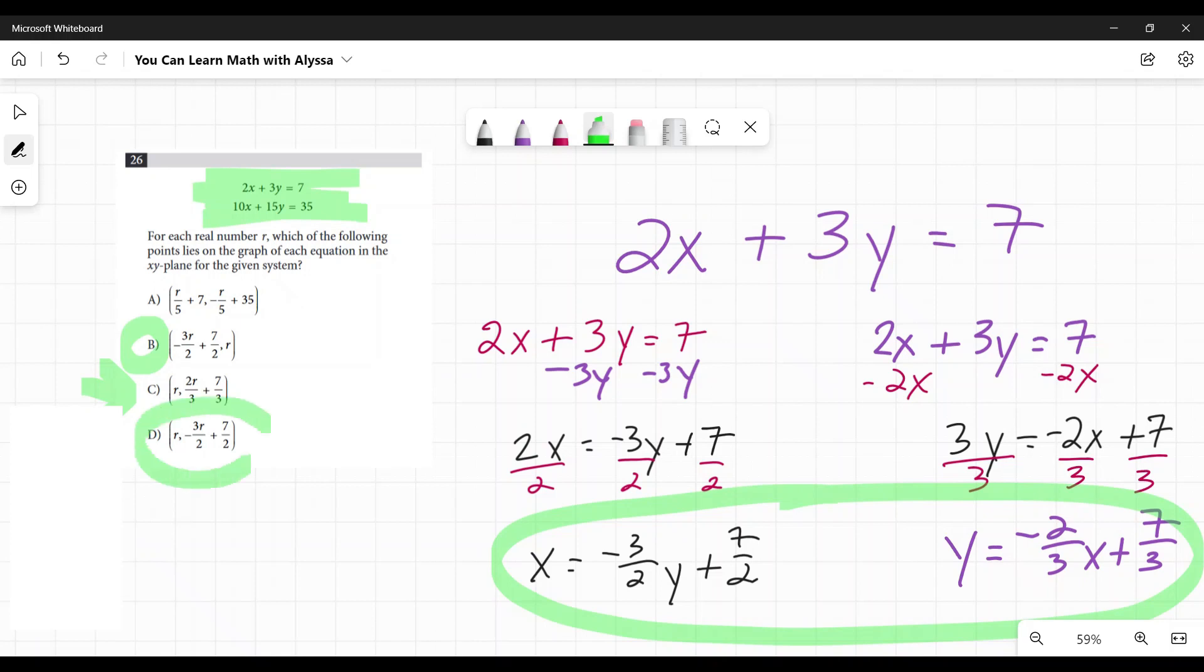And then this one, negative 3r over 2 plus 7 over 2. It's the same there again. Now, if I'm looking this and this is an unusual problem, it's very conceptual. Now I'm zeroing in on B and D because they're both the same. They're just reversed and they both match this one that I just got. So already I'm thinking, okay, so this being a positive and this being a negative, that means something. This one is out. C is out. So now I'm just going to look at B and D.